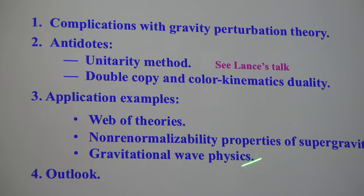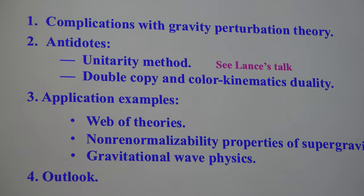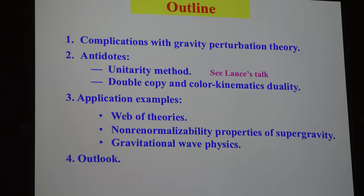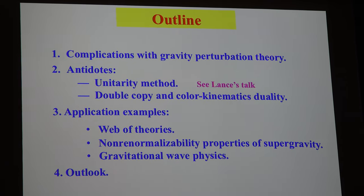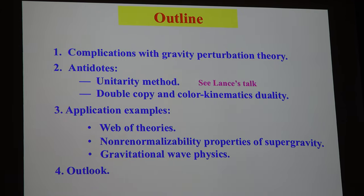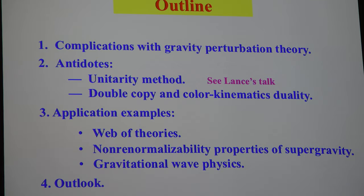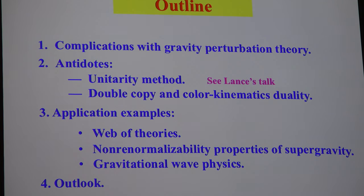Then I'll talk about the double copy and color-kinematics duality, which helps us do gravity perturbation theory in a very efficient way — something very cool. Then we'll talk about applications: the web of theories, which is a way of thinking about different types of theories and how they're related through the double copy. As one application, we'll discuss non-renormalizability properties of supergravity, and then a more recent application is applying these ideas to gravitational wave physics for LIGO.